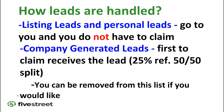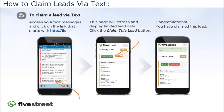Then there are company-generated leads — the first agent to claim these gets them. There is a conversion team you can join at elitescoop.com/onlineleads to sign up, agree to the 25% referral fee and a 50/50 split. If you're on that team and want to stop receiving those leads you can be removed, but it is opt-in, so not everyone will receive company-generated leads until they sign up.